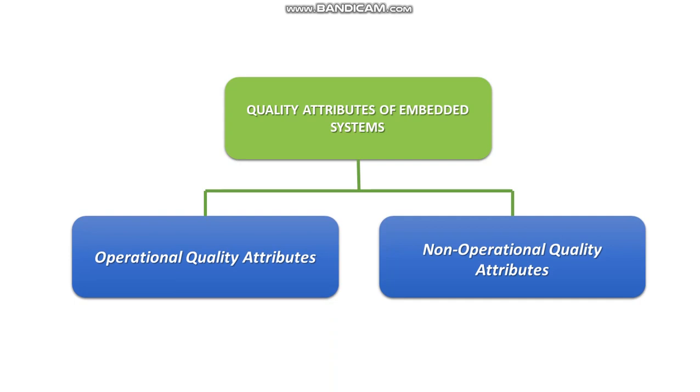So the first one is operational quality attributes. These are the attributes related to operation or functioning of an embedded system. The way an embedded system operates affects its overall quality. So it's all related to the functionality and its operation. Whereas the non-operational, as the name itself suggests, is not related to the operation or the functionality.